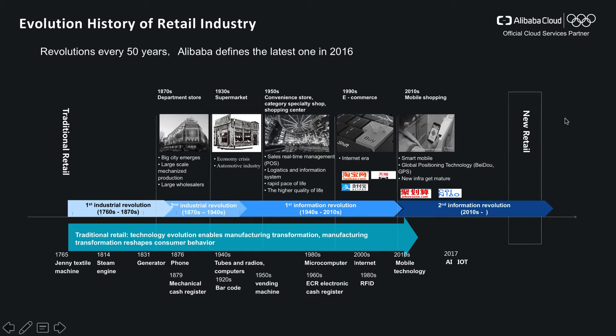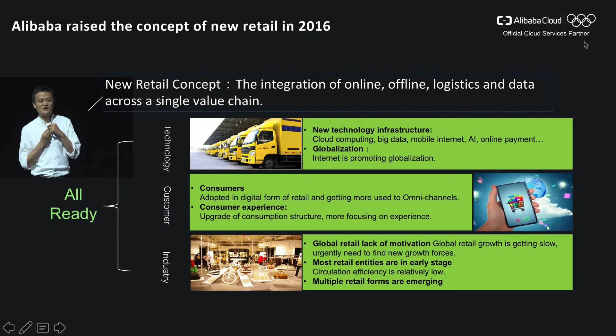We call it new retail. New retail is a concept raised by Alibaba Group in 2016. It was raised by our CEO Jack Ma, who gave a definition: new retail is the integration of online, offline, logistics, and data across a single value chain. The reason new retail was introduced is because of changes in three areas.